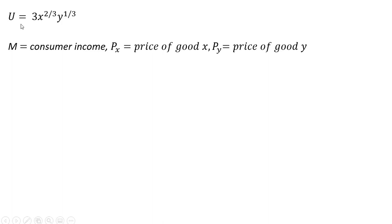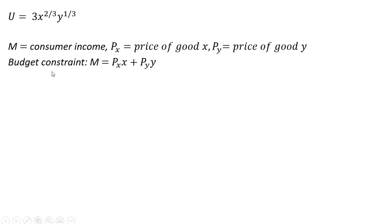Here is our consumer's utility function — a function of units of good x and good y. m represents consumer income. p subscript x is the price of good x, and p subscript y is the price of good y. The budget constraint is given by the following equation.